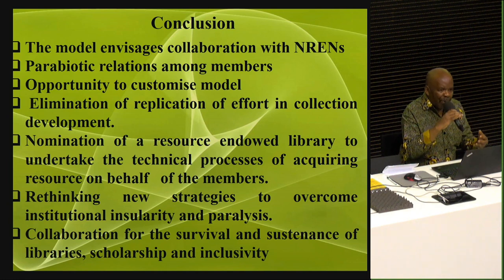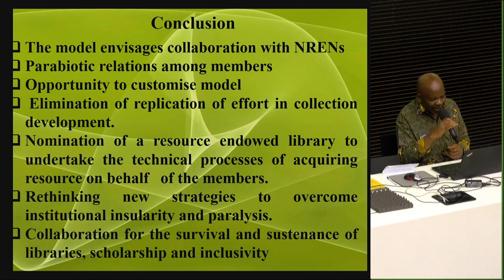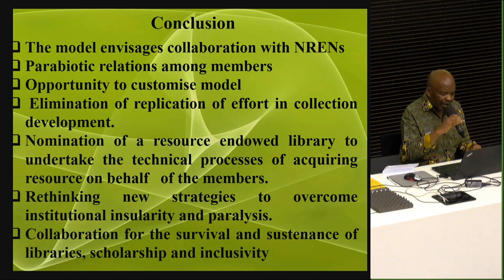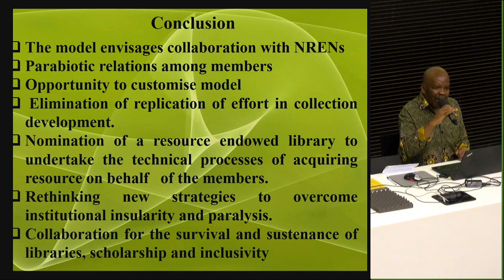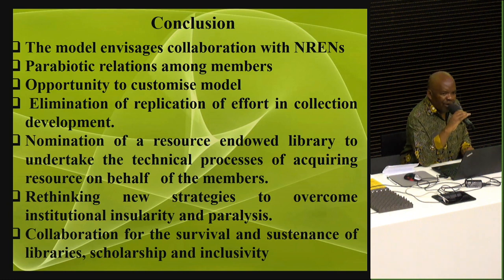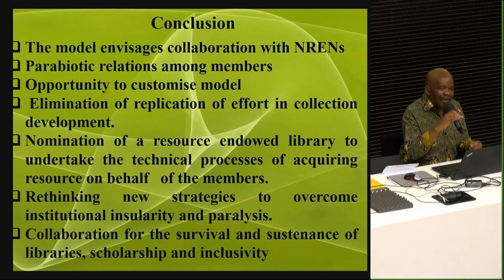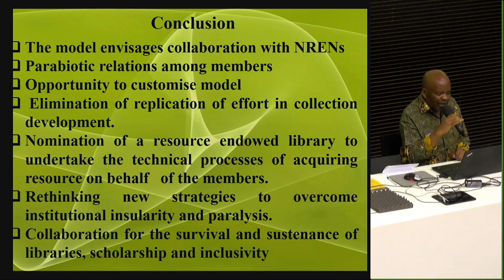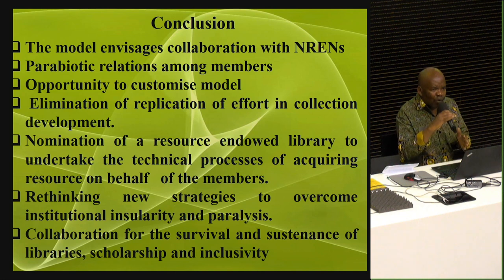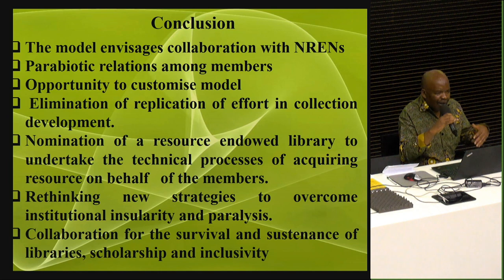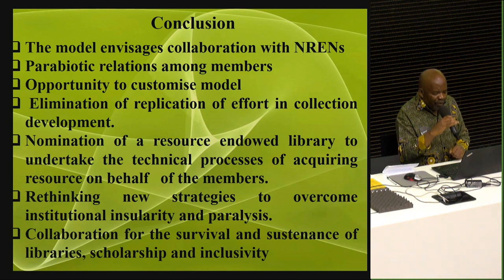If we collaborate with NRENs, it can help institutions to broaden and democratize access to scholarship and enhance teaching, learning, and research. We also believe it can promote parabiotic relations among members. Parabiosis is a theory from entomology — when entities cooperate, they don't lose their identity but remain with their distinctive identity, even though they are part of a cooperating group. The model also eliminates the replication of effort in collection development, and through nomination of a resource-endowed library — because our libraries are divided into resource-endowed and resource-starved ones — collaboration for survival and sustenance of libraries, scholarship and inclusivity will be very useful.